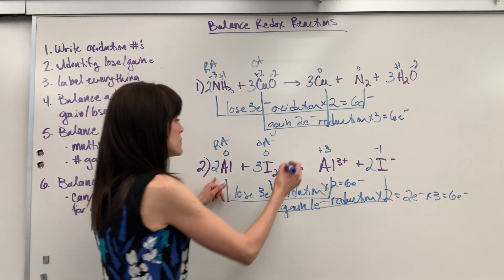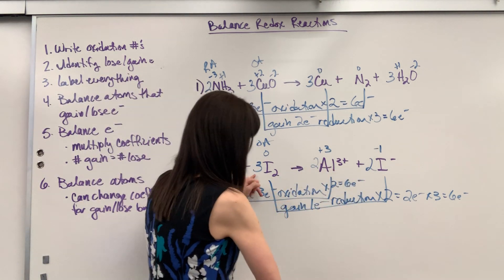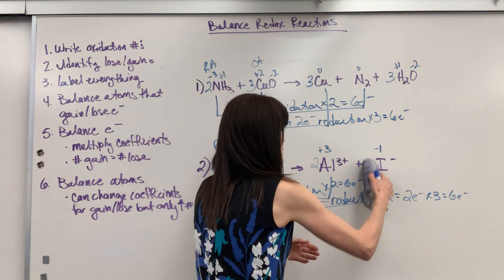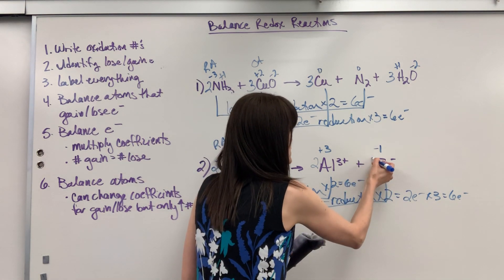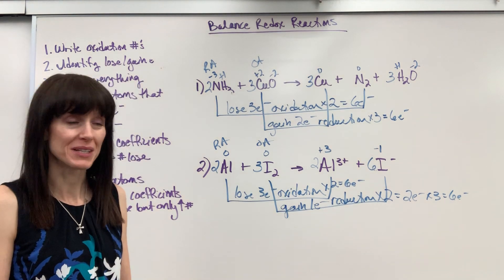Now last one, we just have to balance the atoms. So I got two aluminum, two aluminum, six iodine. Let's come here. We're going to change that and put a six iodine. And now we are finished.